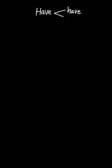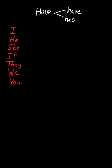The verb 'to have' has two forms: 'have' or 'has', and we use them differently with the seven pronouns we have in English. 'I' takes 'have': I have. 'He has', 'she has', 'it has'.